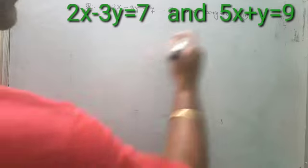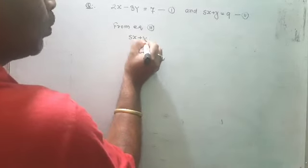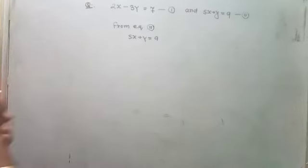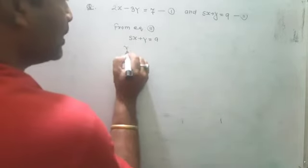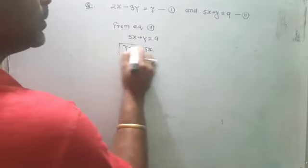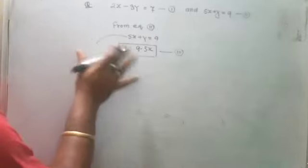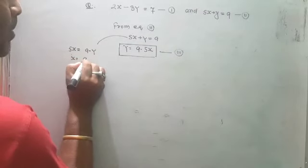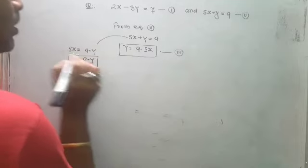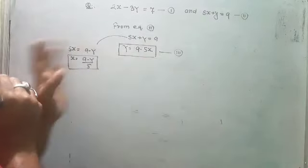One more question: 2x minus 3y is equal to 7 and 5x plus y is equal to 9. Take equation two this time. From equation two: 5x plus y is equal to 9, so y is equal to 9 minus 5x. This is equation three. Finding x would be more complicated — 5x equal to 9 minus y gives x equal to 9 minus y by 5 — so it is simpler to take y.